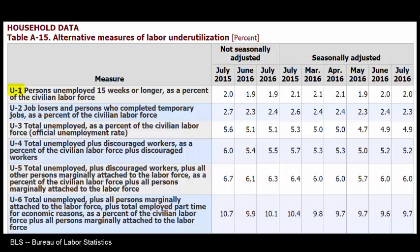We'll start with U1. U1, unemployment one, covers persons unemployed for 15 weeks or longer. We're looking at long-run unemployment in the economy. From July 2015 to July 2016, that percentage has remained the same.